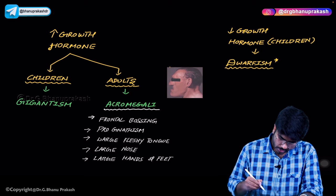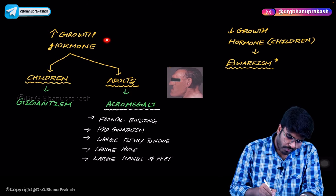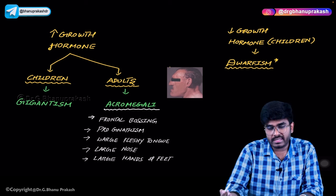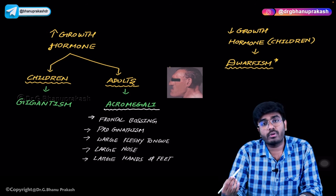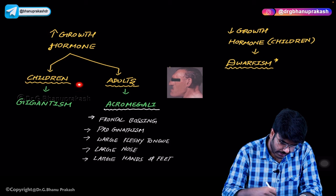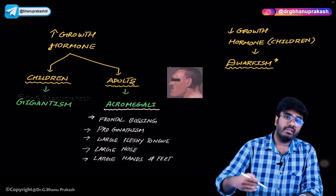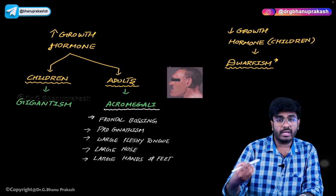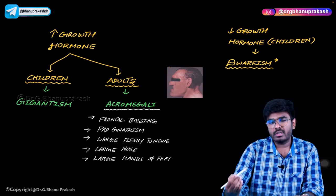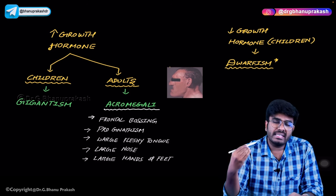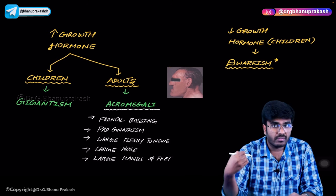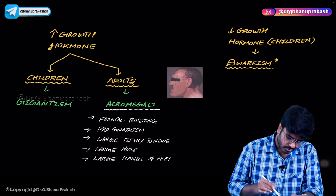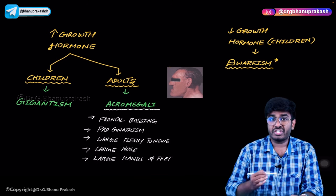Now let's look at abnormalities of growth hormone. A pituitary adenoma of somatotropes — a functional somatotropic tumor — produces excess growth hormone. In children, excess growth hormone acts on the still-open epiphyseal plates, causing gigantism. Such children can grow to 8 or 9 feet tall because their epiphyseal plates are not yet closed.